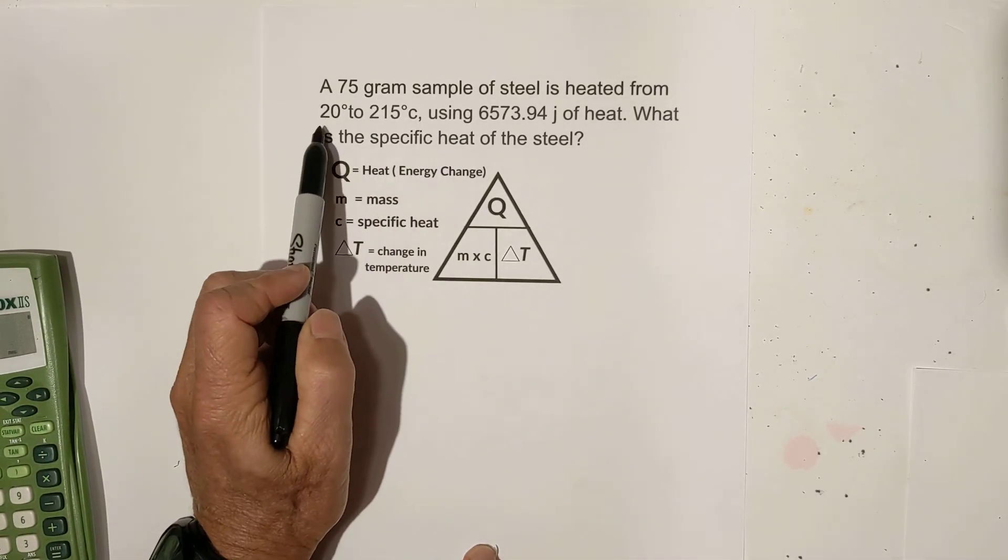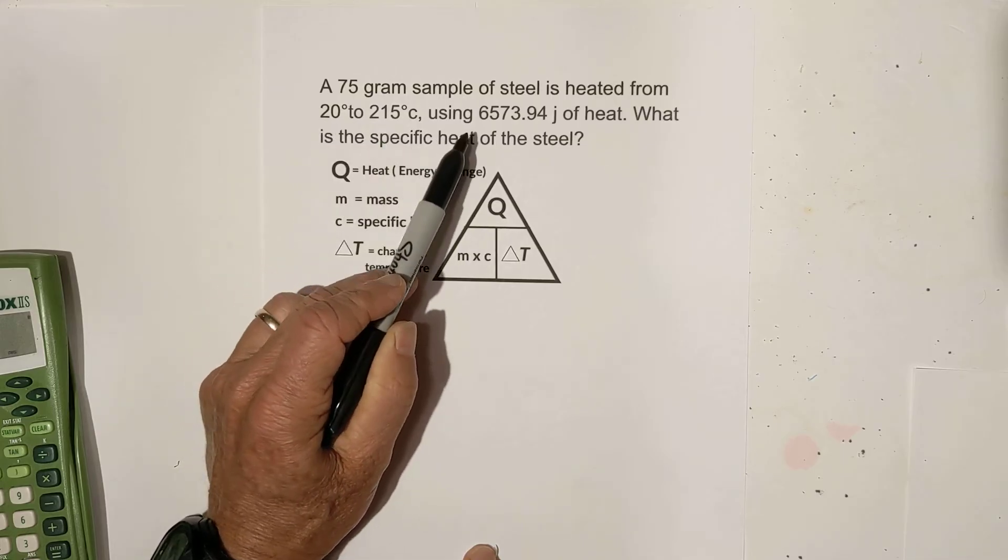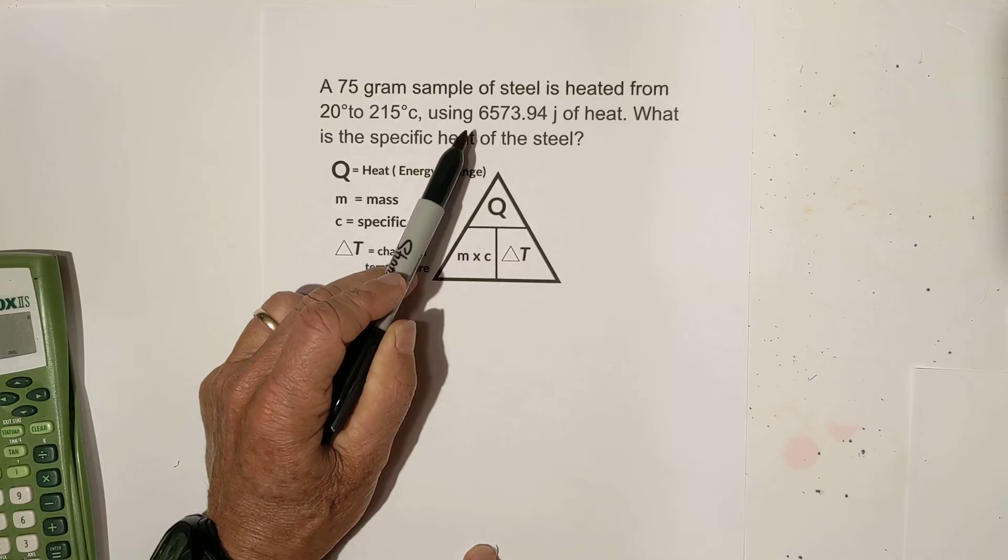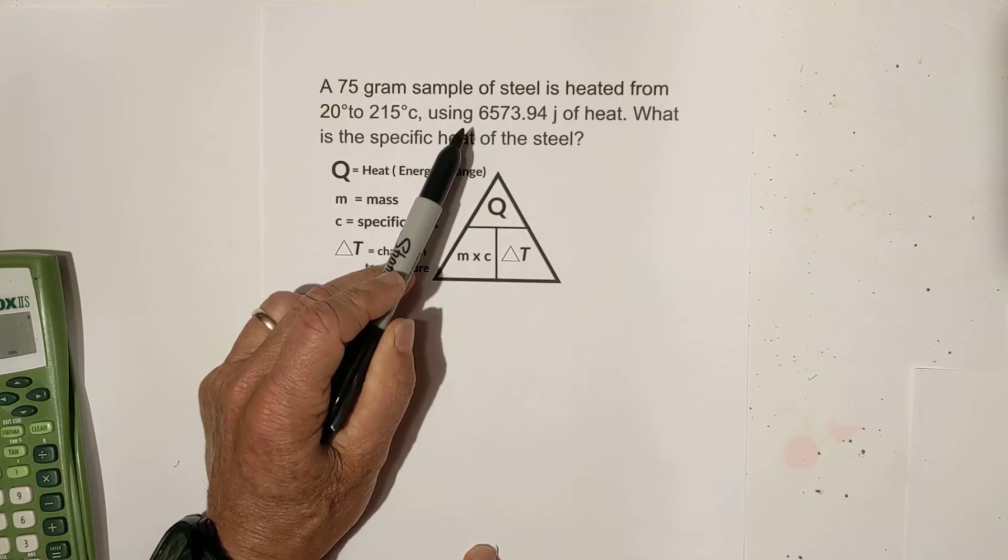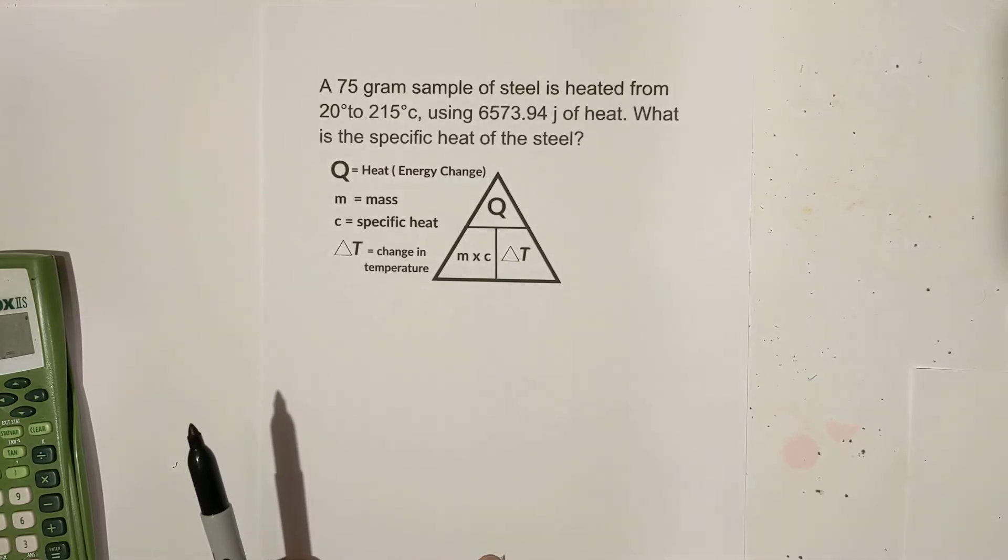It says 75 gram sample of steel is heated from 20 degrees to 215 using 6,573.94 joules of heat. What is the specific heat of the steel? I have a hard time saying specific. So let's see what we have.